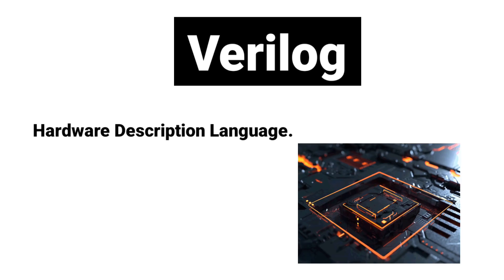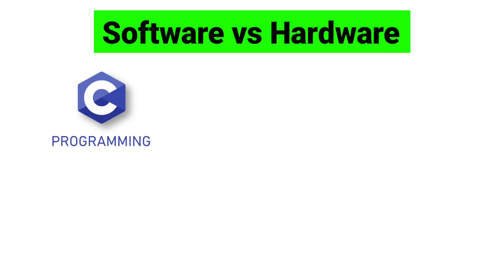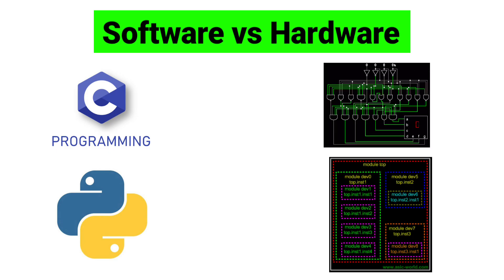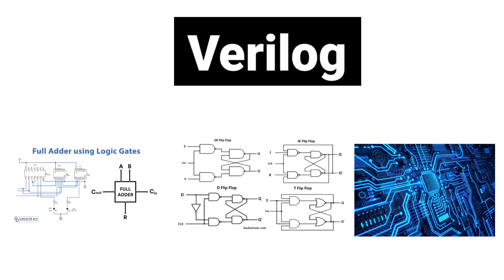Verilog is a hardware description language, also called HDL. Unlike C or Python which are used for software, Verilog is used to describe hardware. With Verilog, we can model circuits like adders, flip-flops, processors, and even big memories, all using code instead of drawing logic gates by hand.